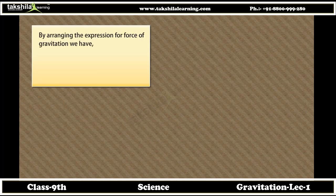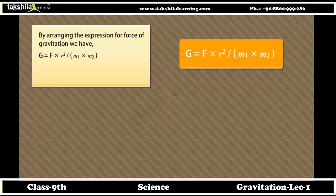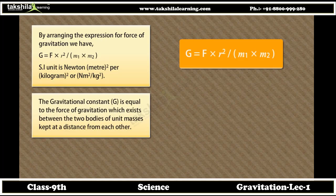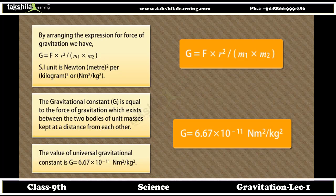By arranging the expression for force of gravitation, we have G = F × R² / (M1 × M2). The SI unit is Newton meter square per kilogram square. The gravitational constant G equals the force of gravitation which exists between two bodies of unit masses kept at a unit distance from each other. The value of the universal gravitational constant is G = 6.67 × 10⁻¹¹ Newton meter square per kg square.